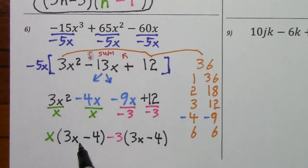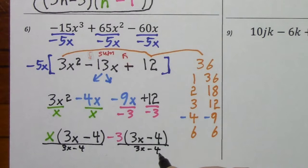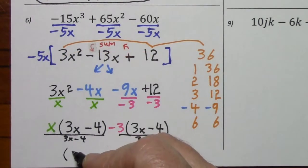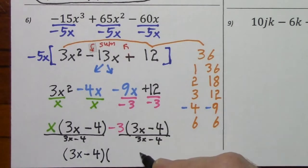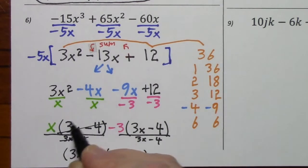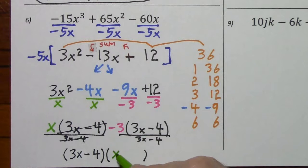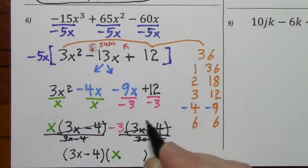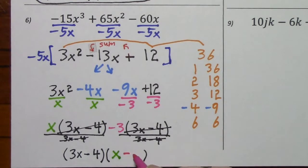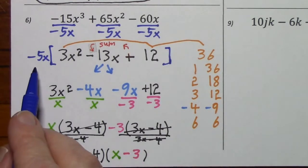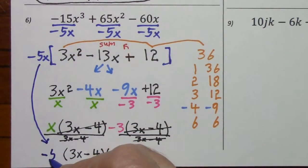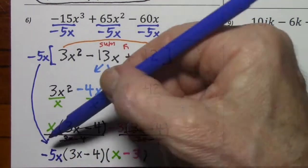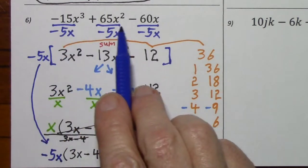Now what we have in parentheses matches — that's what we're going to factor out. We'll have 3x minus 4 in front of parentheses. When we factor it out of here we're left with x, and when we factor it out of here we're left with negative 3. And don't forget to bring down the negative 5x. So here's the factored form of the original polynomial.